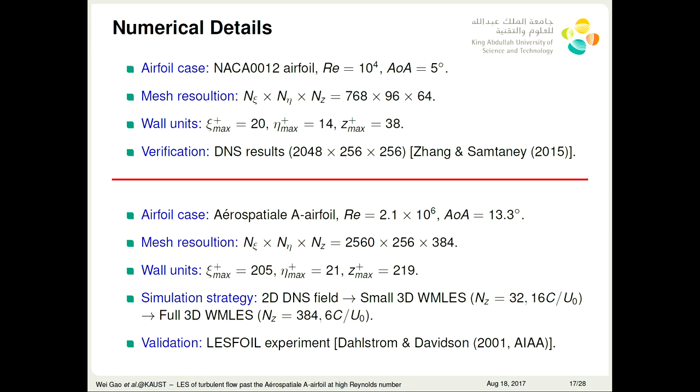To save our computational cost for these high Reynolds number simulations, we first get the 2D DNS field, and let this 2D DNS field as the initial field for the small wall model LES simulations. The smallest wall model LES is that in the spanwise direction, we use 32 mesh points, then switch to the full 3D wall model LES. Only the last 4 convective timescale results are used to analyze, and these results would be compared with the LES-FOIL experiment.